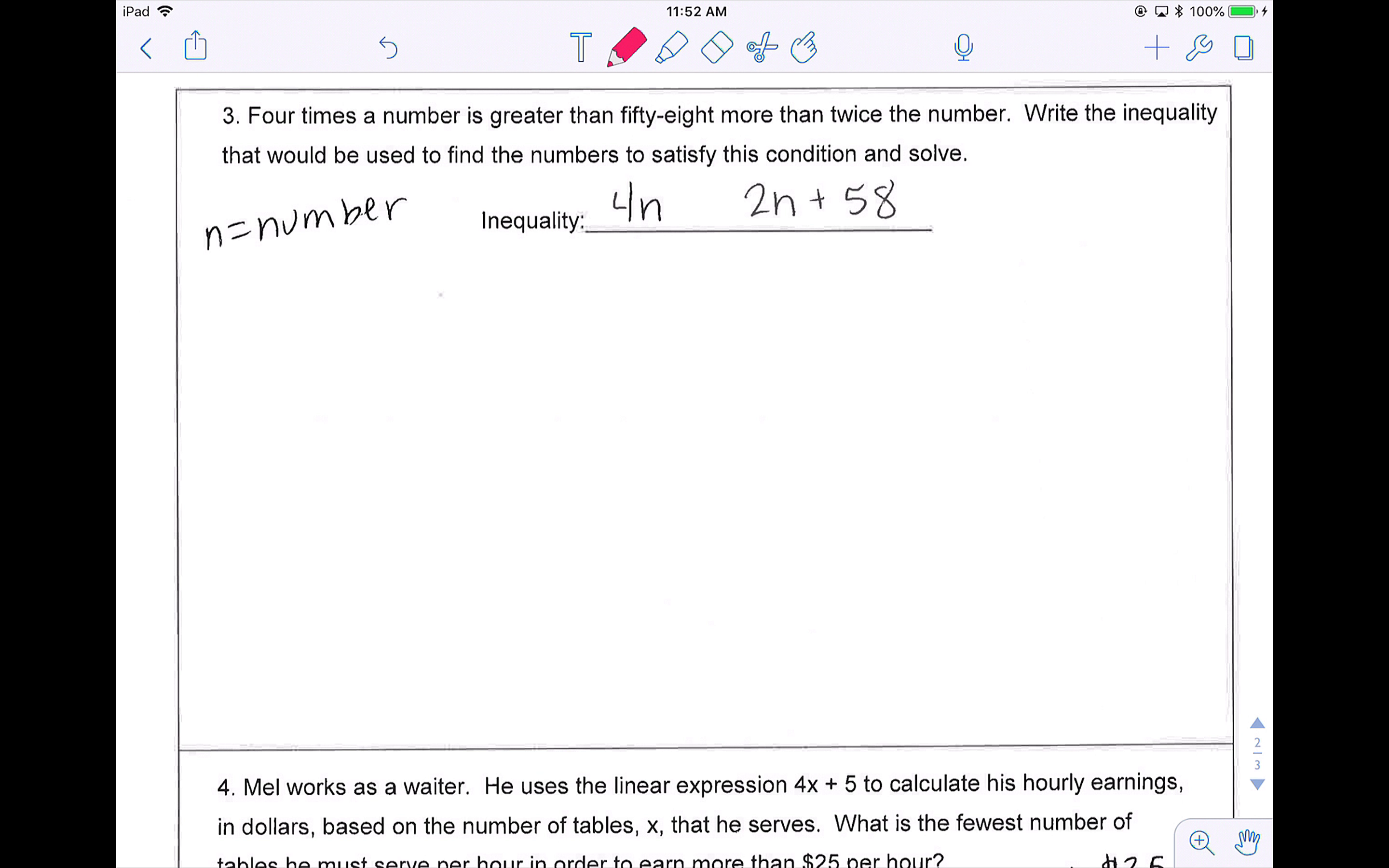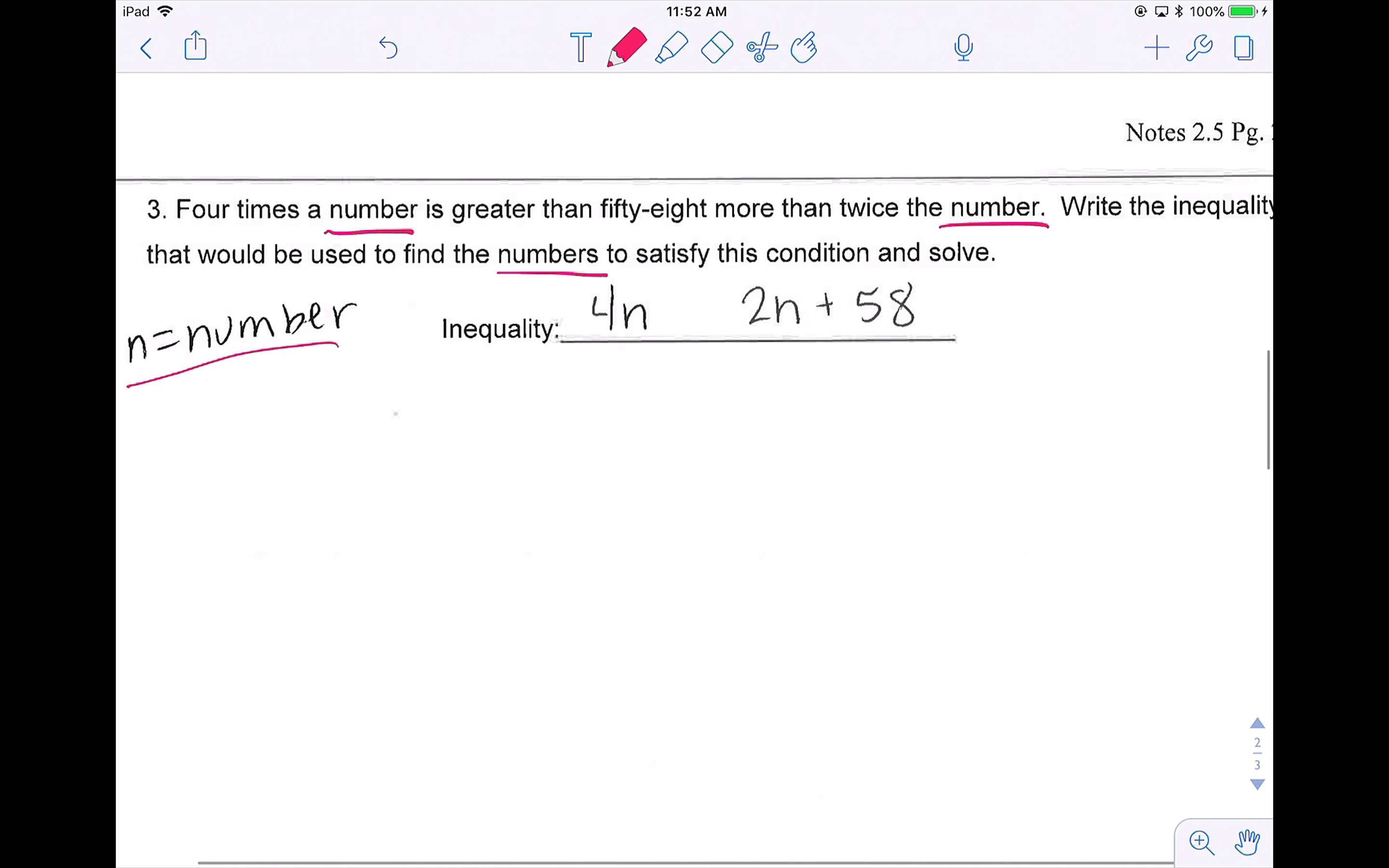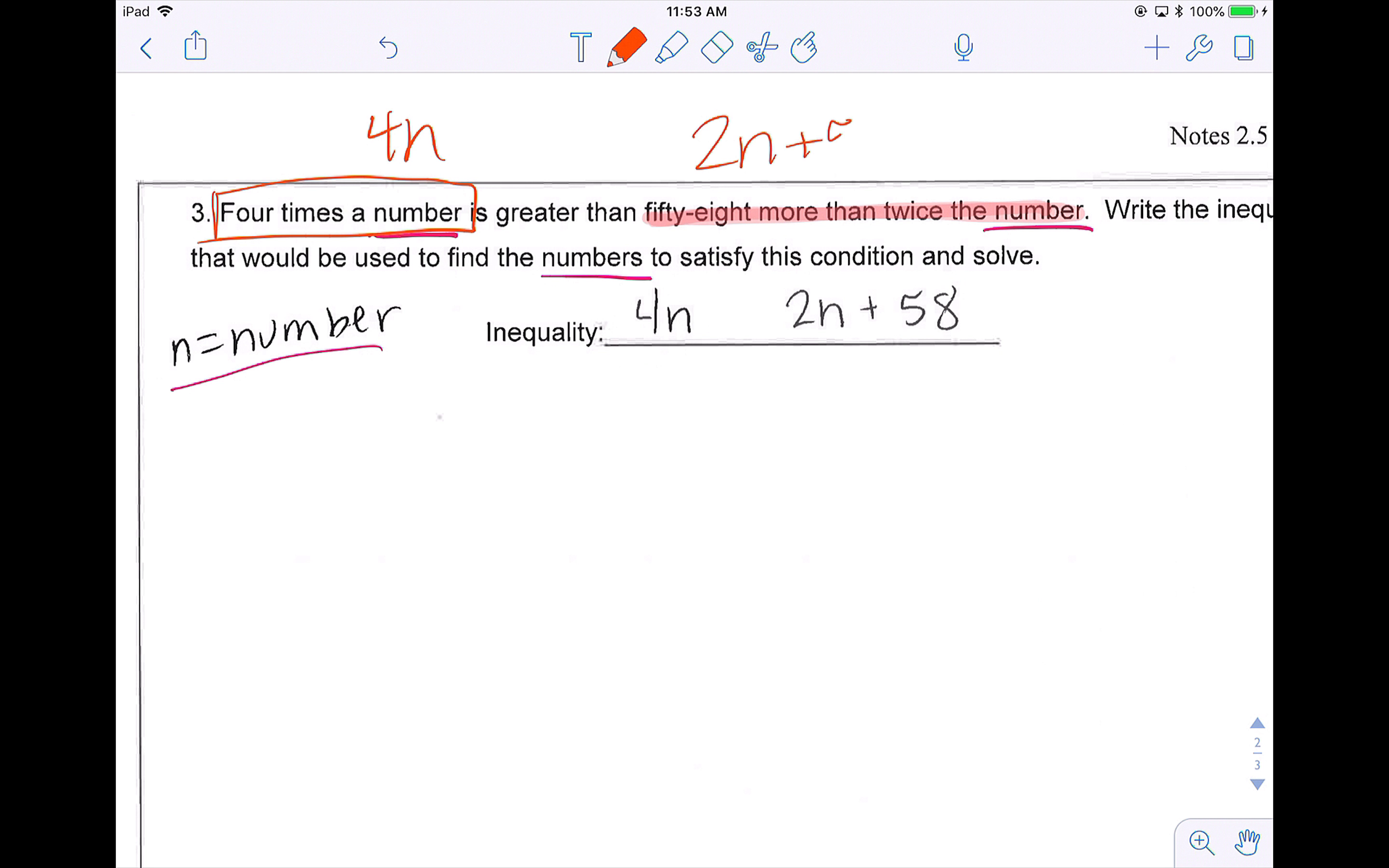Problem three, four times a number is greater than 58 more than twice the number. Write the inequality that would be used to find the numbers to satisfy this condition and solve. We've been told that N is number. So anywhere I see the word number, I'm going to use an N. This has kind of already been started for us. Four N would be that four times a number. And then two N plus 58 comes from 58 more than twice the number. So we just need to figure out that is greater than.